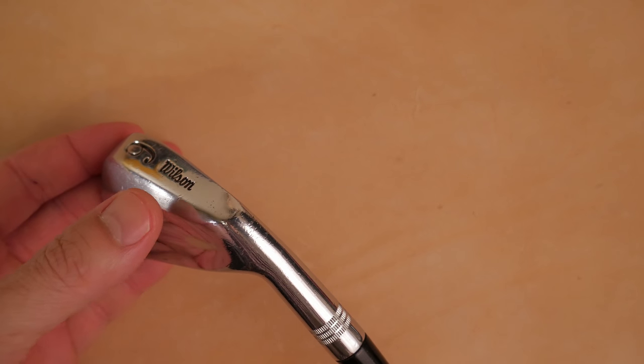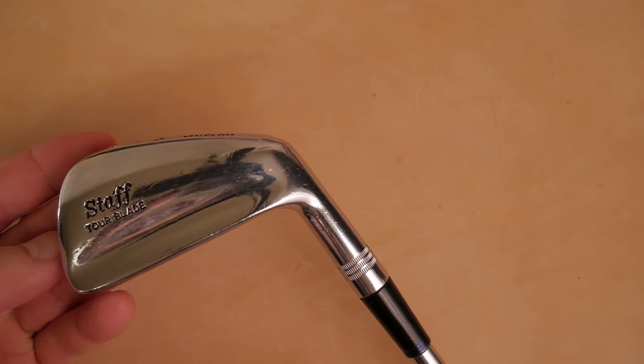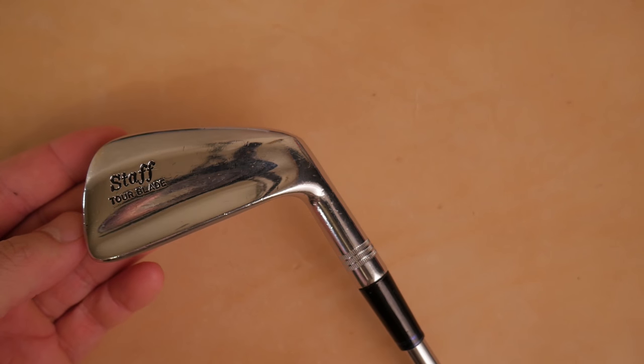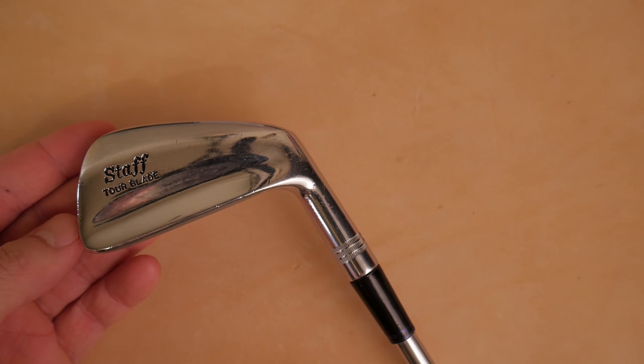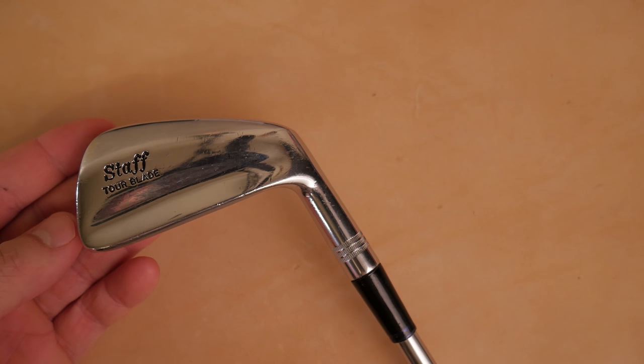You can see on the sole here, Wilson, 6, Staff Tor Blade, the Queen of England, President Donald Trump, Barack Obama. What do all of these people have in common?